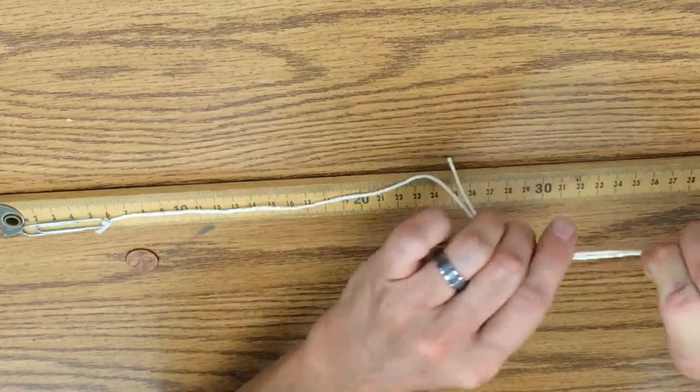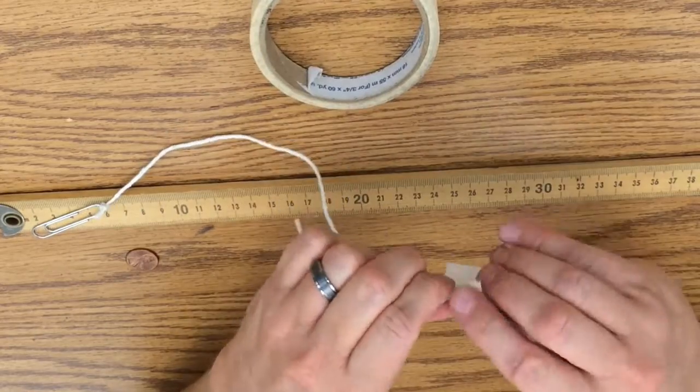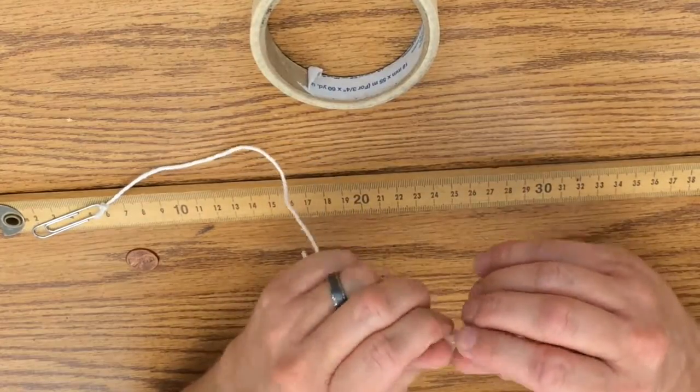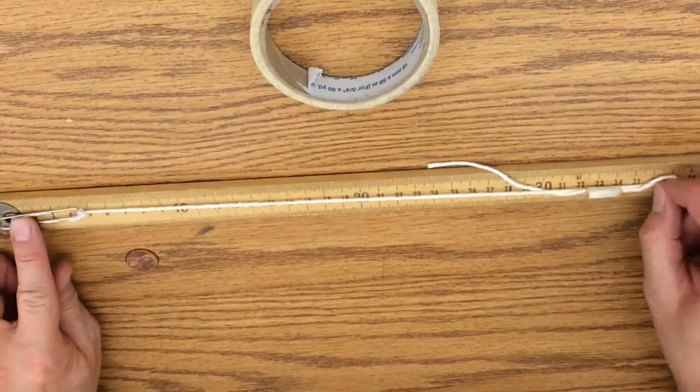Put a tiny piece of masking tape around the string to make a loop. The loop should be large enough to hang over a pencil. Remeasure to make sure the pendulum is 38 cm from the tip of the paper clip to the top of the loop.